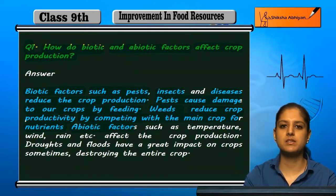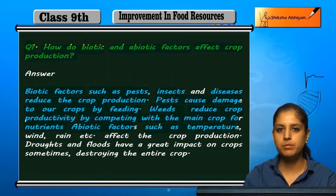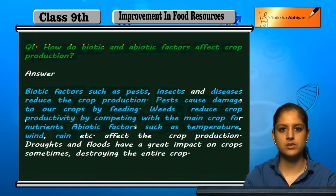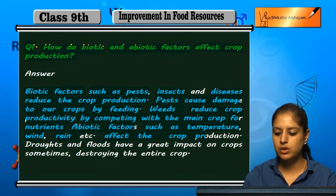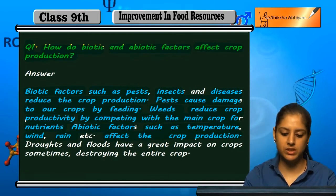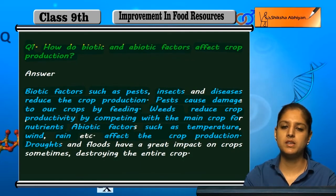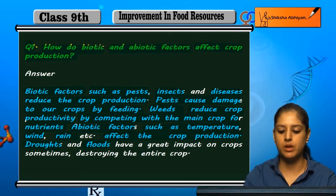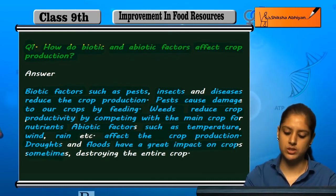The non-living abiotic factors include temperature, wind, rain, etc. Crop production is also affected by these factors. If there is drought, flood, or excess water, the crops are also reduced.